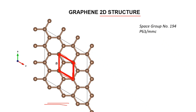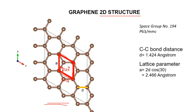This is the unit cell of graphene, where 'a' is the lattice distance. Similarly, side 'b' equals 'a', as seen from its geometry, and the included angle between a and b is 120 degrees. The carbon-carbon bond distance d equals 1.424 angstroms, and the lattice parameter a equals 2d cos(30°), derived from geometric relations.